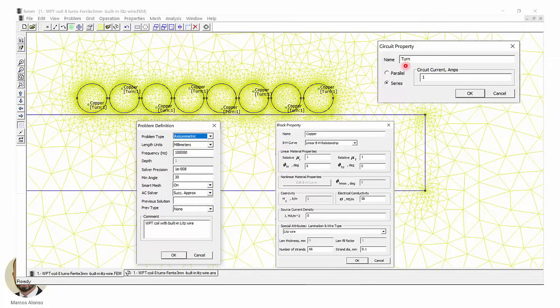And then all the turns are in the same circuit, as shown here. And all of them are in series. So this is going to make very easy the calculation of the total inductance, reactance, and resistance of the WPT coil.